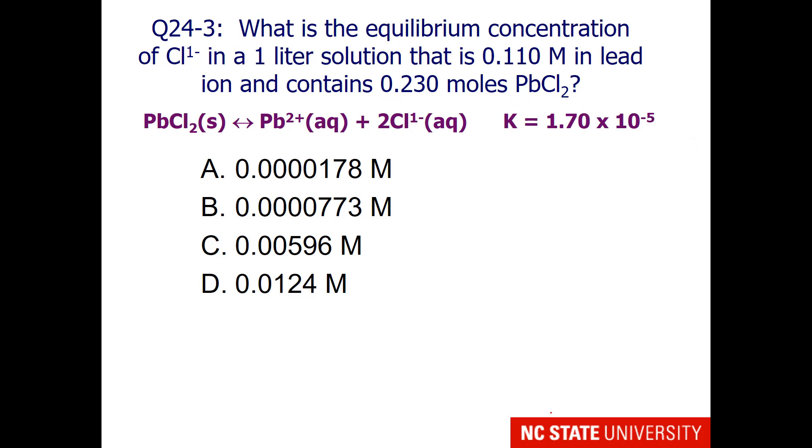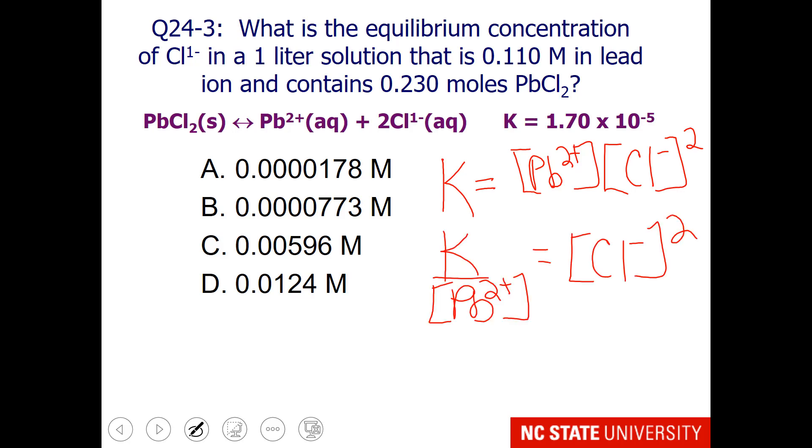First we should write the equilibrium expression. Now we should rearrange this so that chloride ion is isolated on one side. The chloride ion is still squared, so to get rid of that we need to take the square root of both sides.